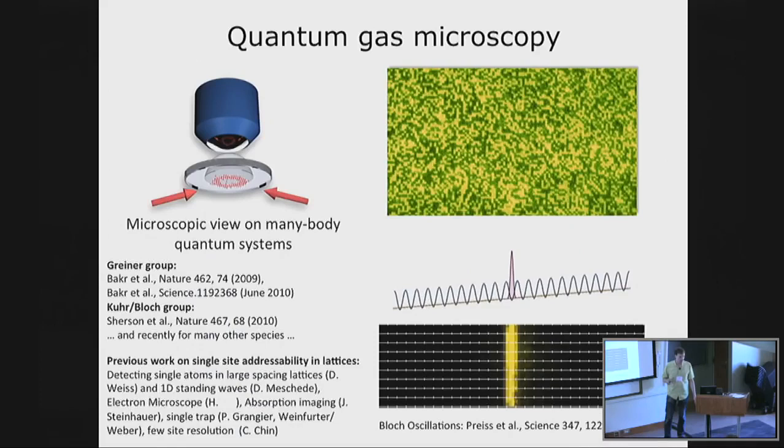Our favorite tool is the quantum gas microscope, which allows us to create a many-body system that is fully controlled. We can use the microscope to image all individual atoms — here's a picture of many individual atoms — and we have pretty much perfect fidelity in imaging them.